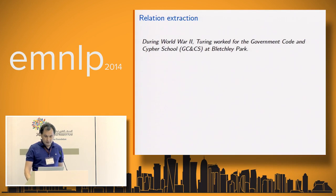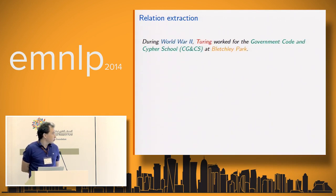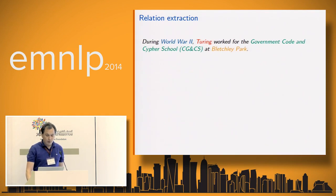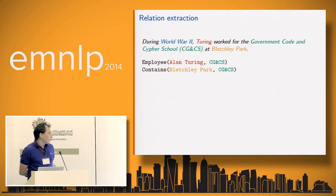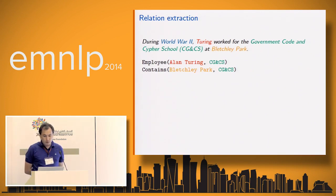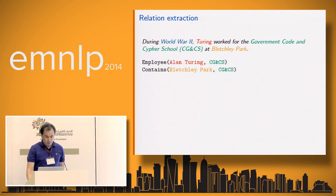For example, in this sentence there's a bunch of named entities such as World War II or Turing, and basically what we want is to extract binary relations between those named entities — such as the fact that Alan Turing was an employee of the Government Code and Cipher School, or that this school was located at Bletchley Park.